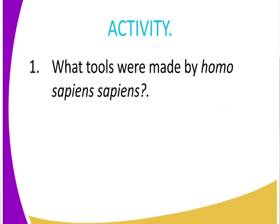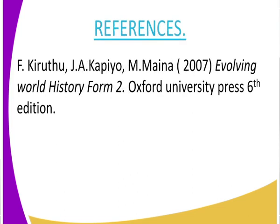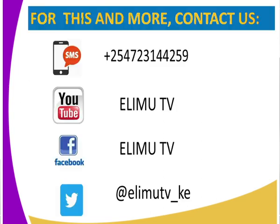There is an assignment for you: get to look at the tools made by Homo Sapiens Sapiens. For your reference, kindly refer to 'His Evolving World History' from Oxford University Press, sixth edition. As always, tune in to your favorite channel — Elimu TV — where you get to watch and learn. Watch our lessons via YouTube, Facebook, and you can also talk to us via Twitter at Elimu TV underscore Kenya. Thank you so much, class — always tune in to Elimu TV.